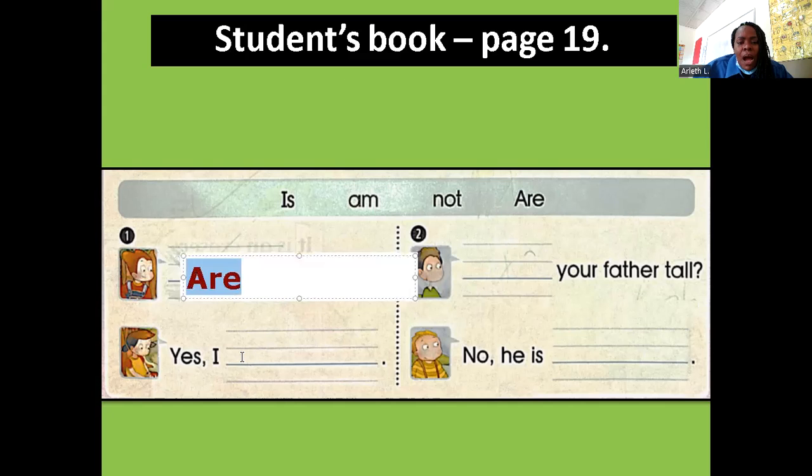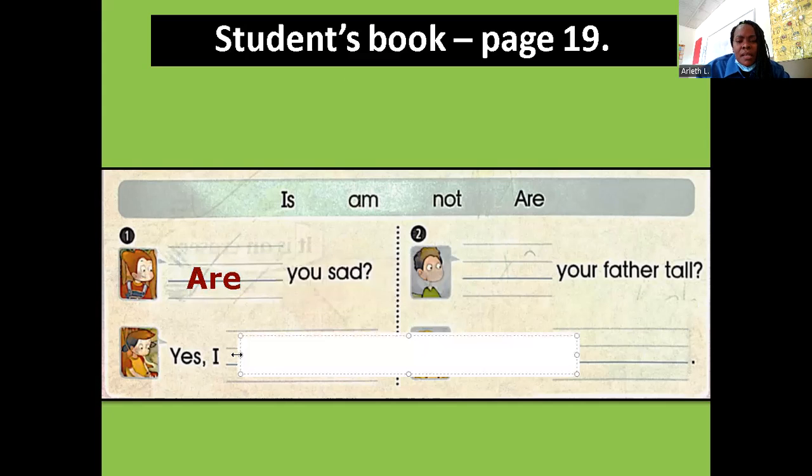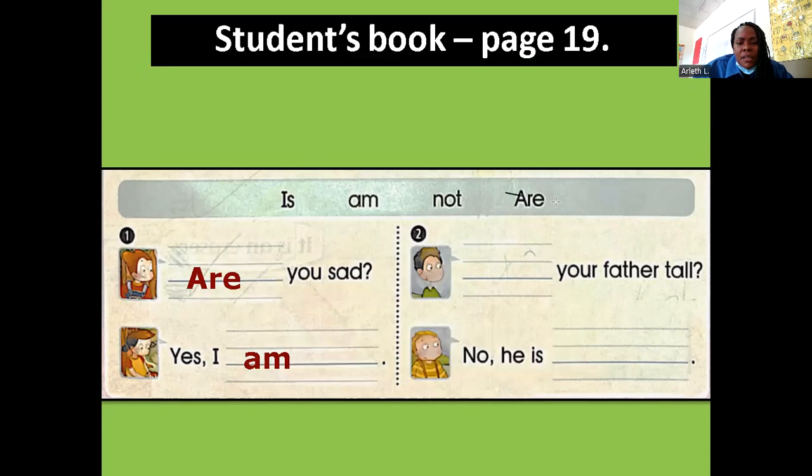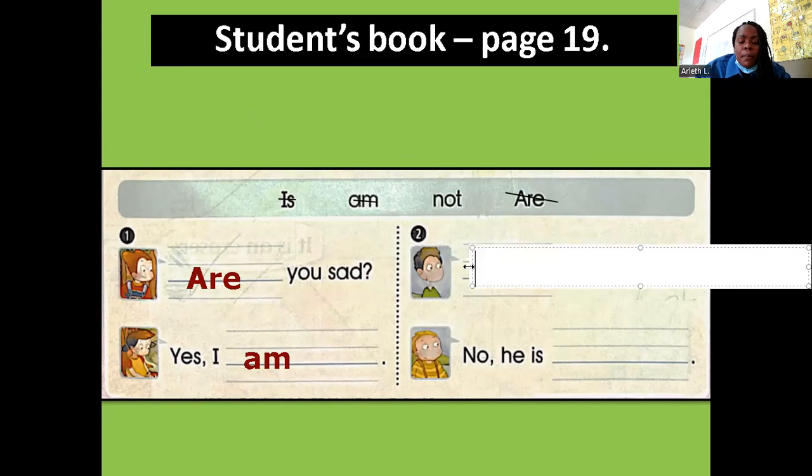Yes, I am. Yes, I am. Look at here, we have the word here: are is here, I will have am. And number three is: is your father tall? Is your father tall, or are your father tall? It's correct but is your father tall.